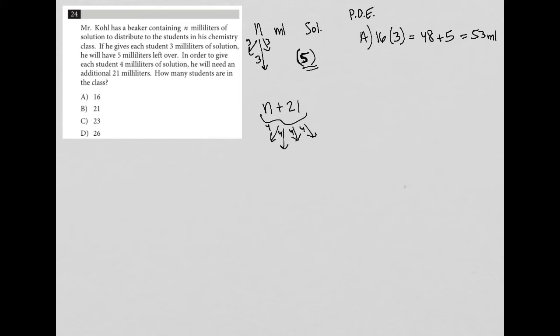You take that same 53 milliliters and add 21, which gets you to 74. Then you'd say, if I have 16 students, I should be able to say that 16 times four equals 74. But it does not equal 74 — in this scenario we'd have none left over, so 16 times four does not equal 74. So this is not correct — cross out answer choice A.